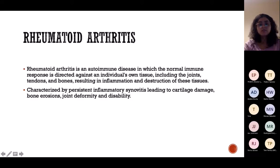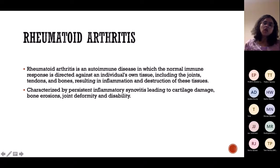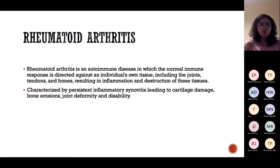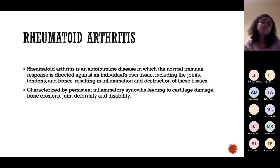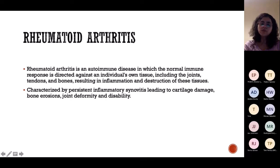Rheumatoid arthritis is an autoimmune disease in which the normal immune response is directed against the individual's own tissue. Our body harms itself. It has a prominent genetic predominance and is characterised by persistent inflammatory synovitis. The inflamed synovial membrane leads to cartilage damage, bone erosion, joint deformity, and disability. Initially there is pain and restricted movement; ultimately, structural joint deformity forms.